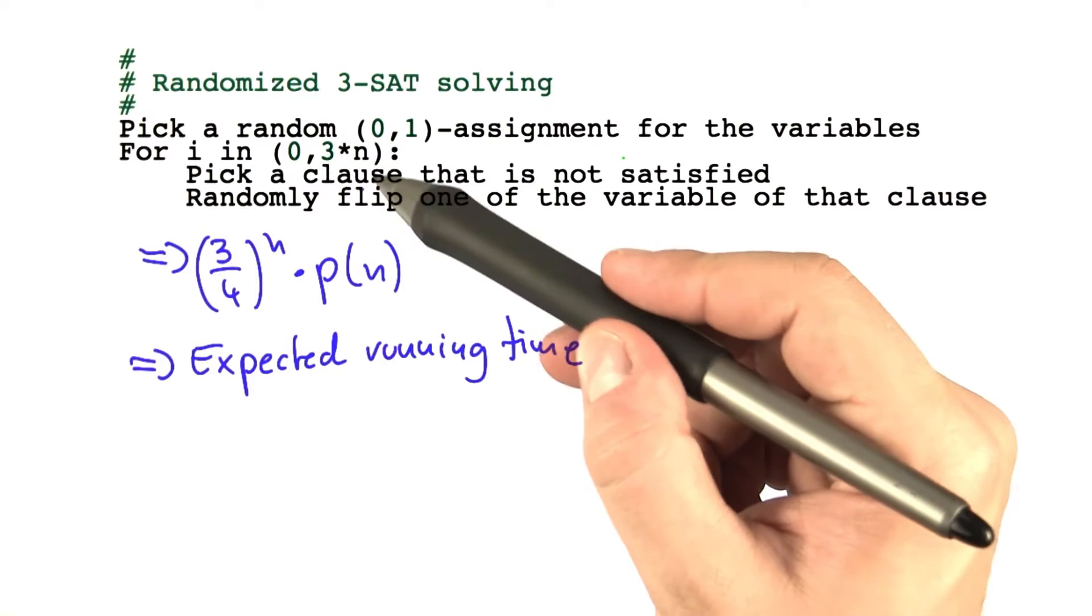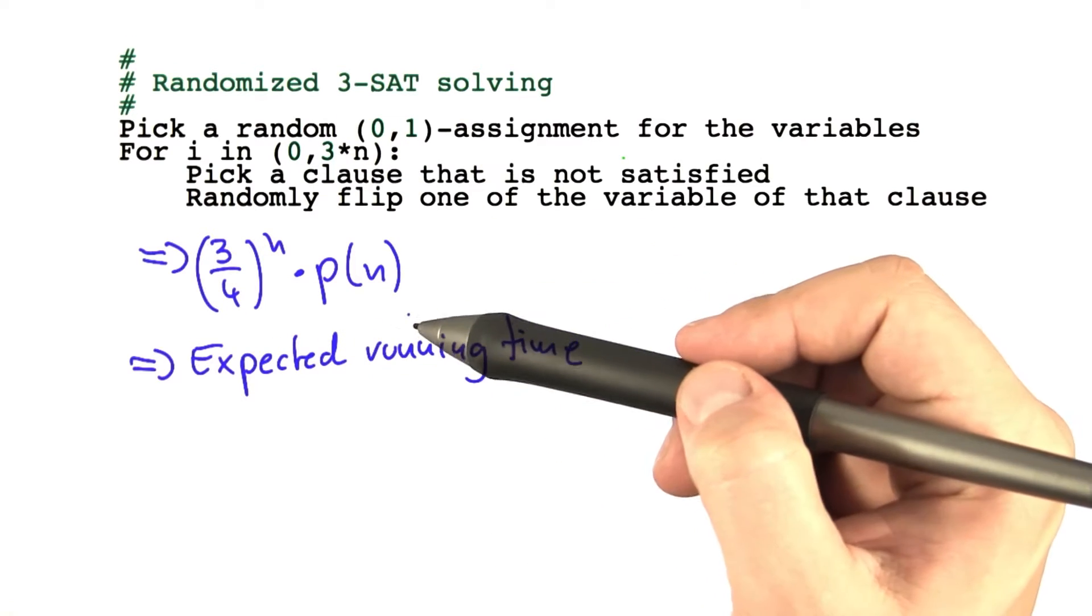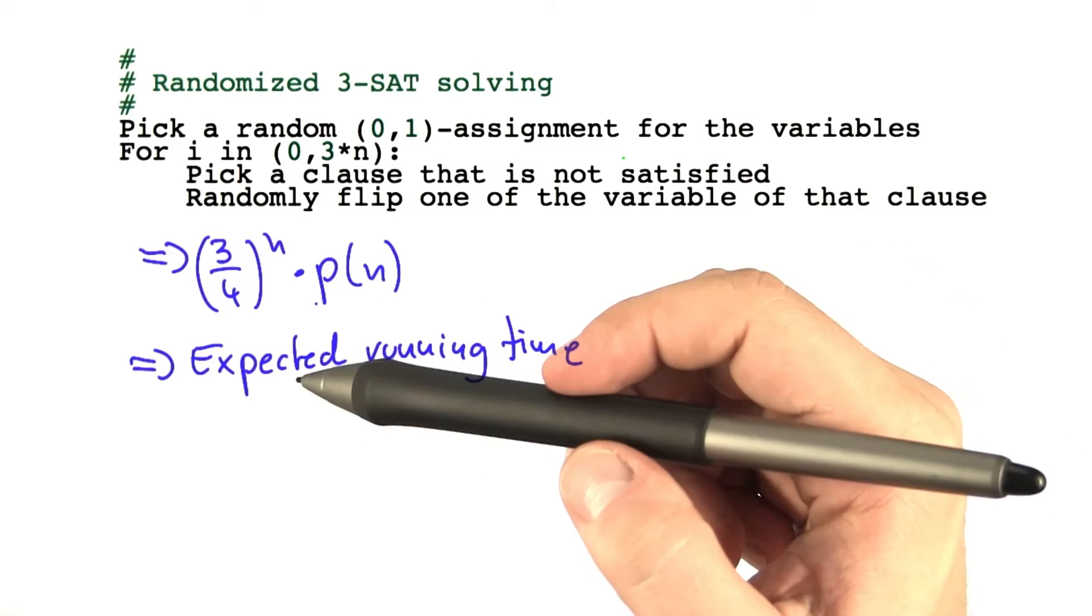So how many times do you have to run this algorithm, given this success probability, to find a satisfying assignment on average, assuming there exists one?